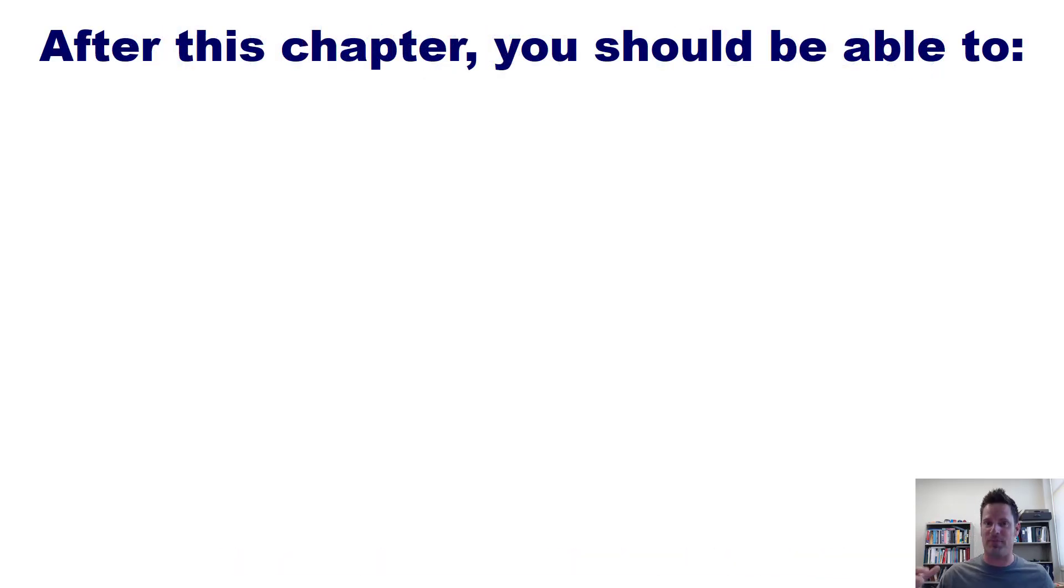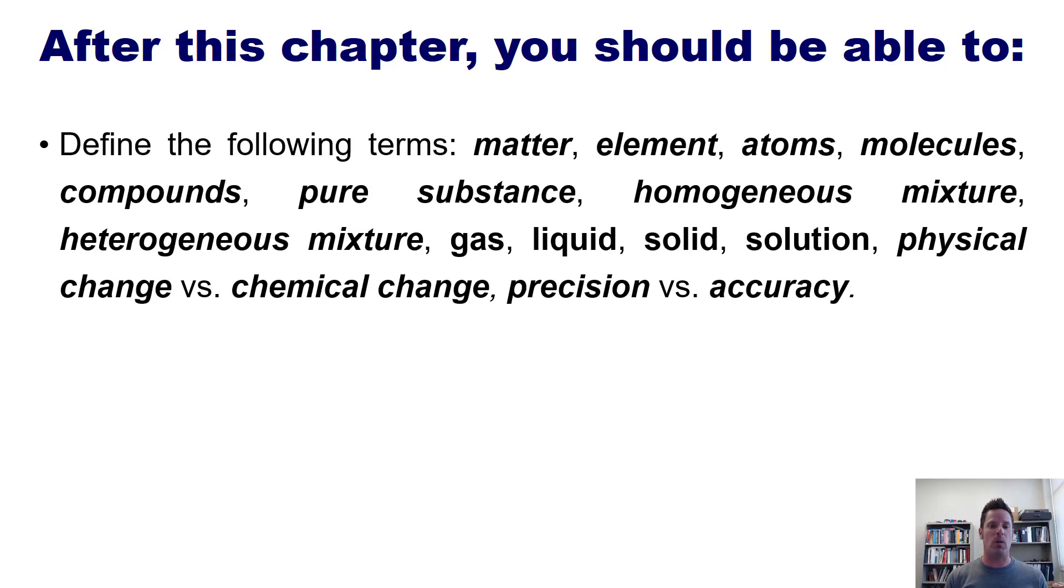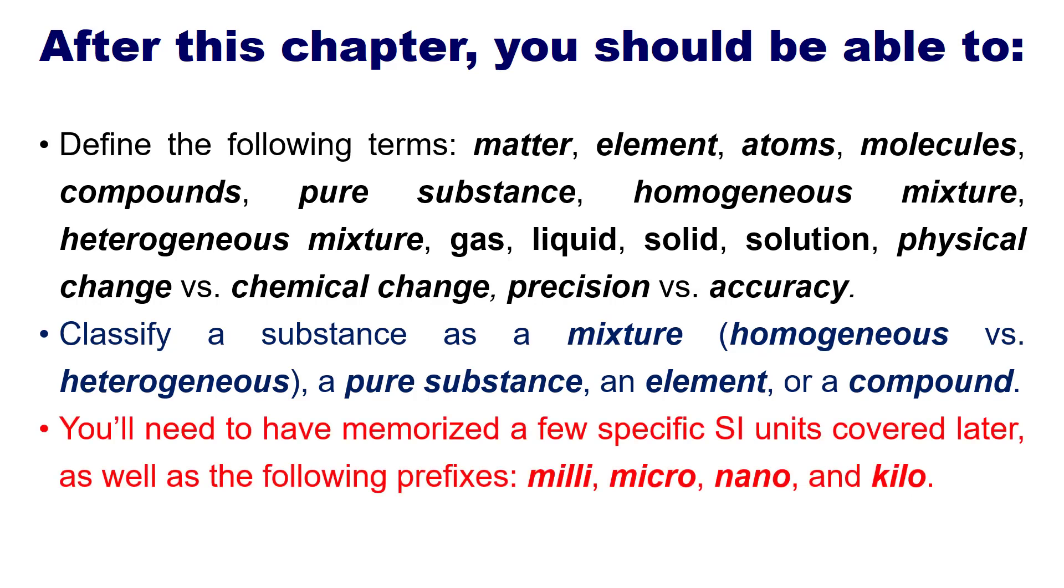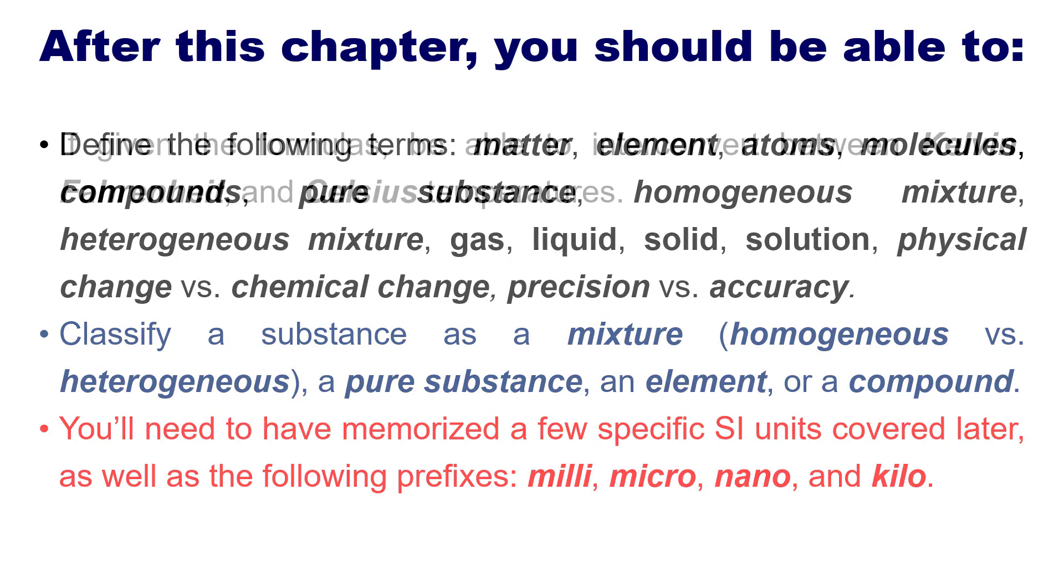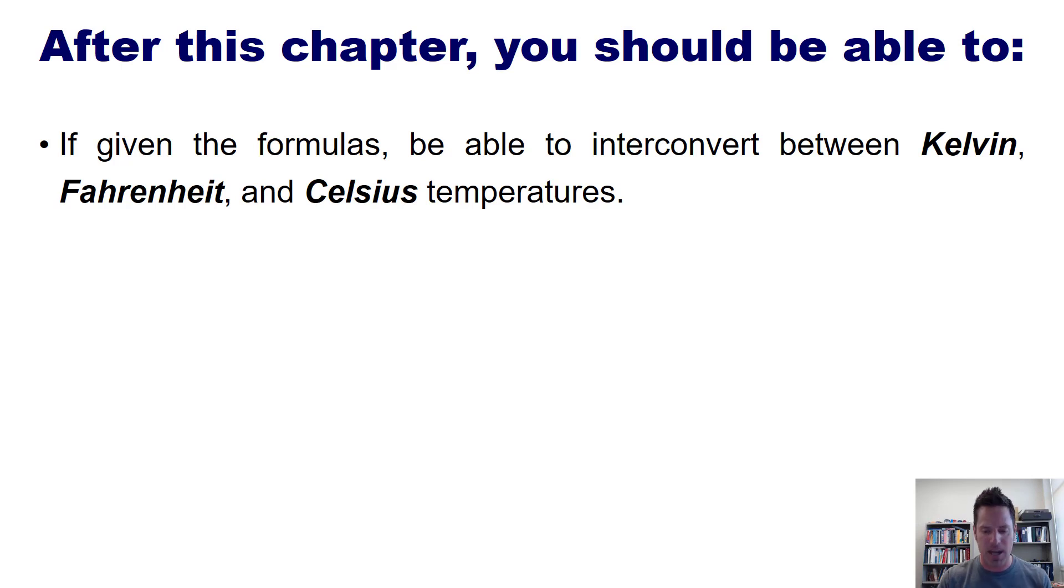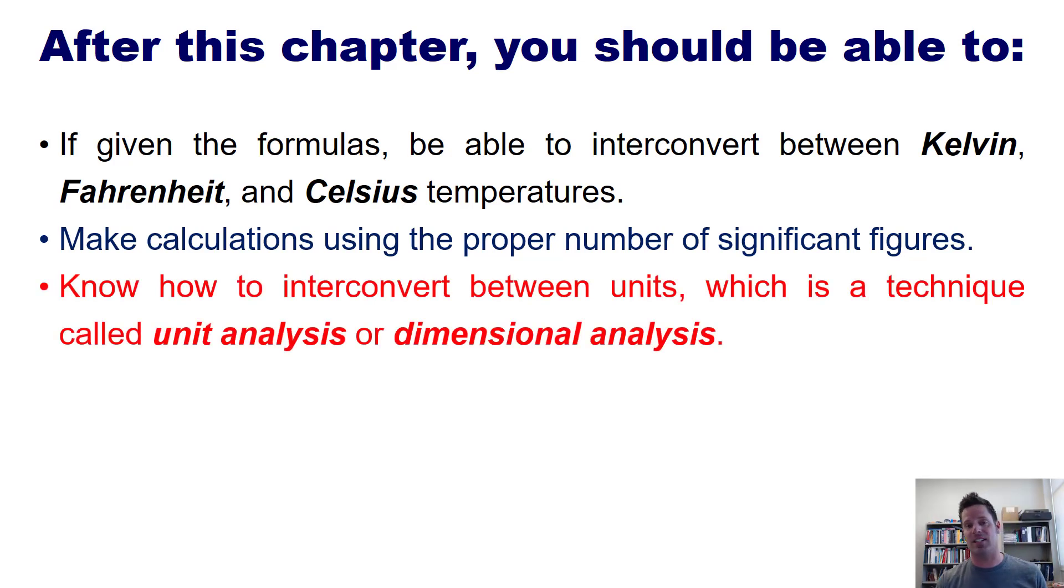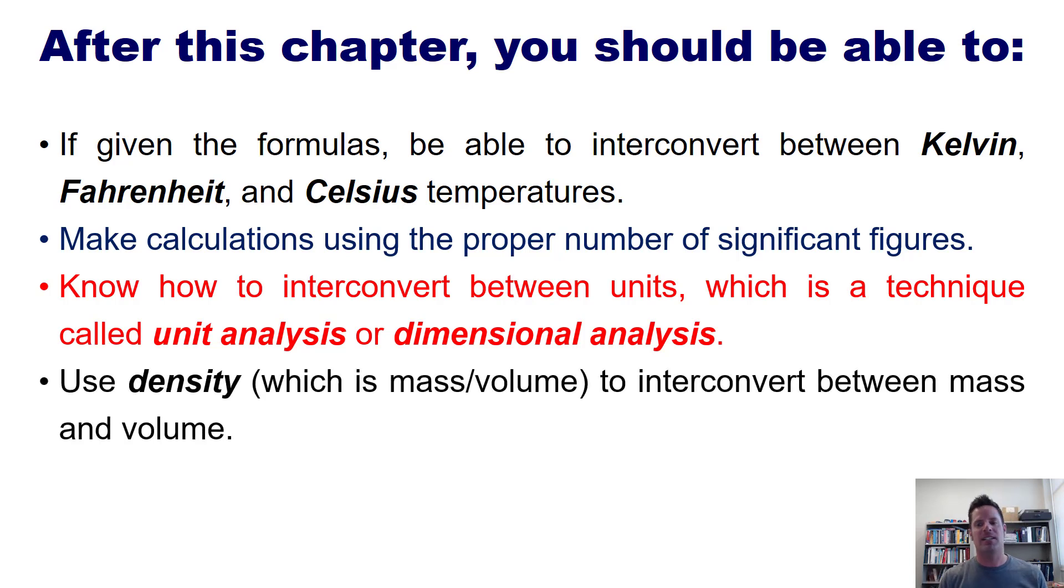After this chapter, chapter one, you should be able to do the following things. In other words, this is a list of skills that you will have once you get through studying chapter one. First, you'll be able to define the following terms, a long list of vocabulary. Second, you should be able to classify a substance. Beyond this, you should also be able to, if given the formulas, interconvert between Kelvin, Fahrenheit, and Celsius temperatures, make calculations using the proper number of significant figures, know how to interconvert between units using unit analysis or dimensional analysis, and use density, which is mass divided by volume, to interconvert between mass and volume. Then let's get to it, starting with a large list of vocabulary.